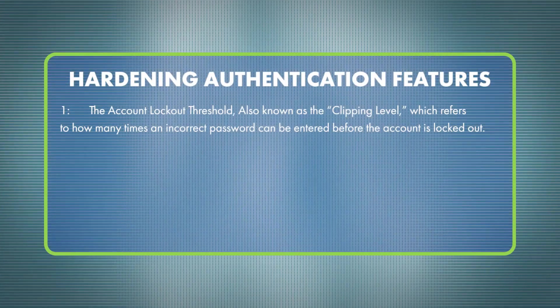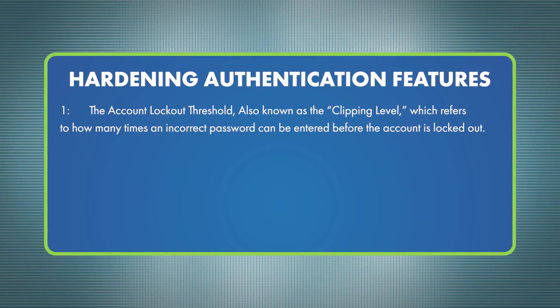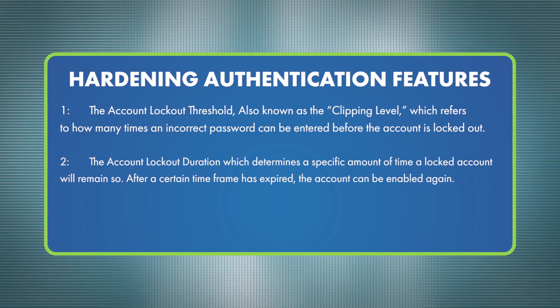Key features of hardening authentication include: one, the account lockout threshold, also known as the clipping level, which refers to how many times an incorrect password can be entered before the account is locked out — determined solely by the chief information security officer; two, the account lockout duration, which determines how long a locked account remains locked. If the time frame is set to zero, the account must be manually unlocked by a systems or network administrator.